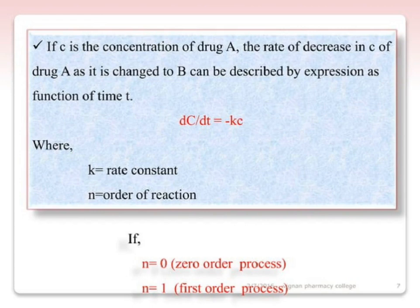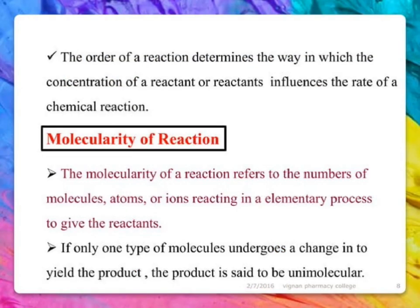The rate equation is: dC/dt = kC^n, where k equals the rate constant and n equals the order of reaction. If n equals zero, it is a zero order process; if n equals one, it is a first order process. The order of a reaction determines the way in which the concentration of a reactant influences the rate of a chemical reaction.